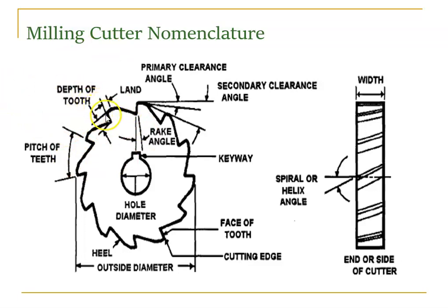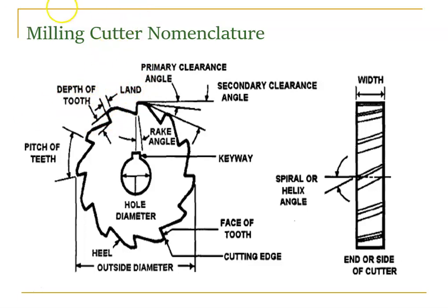Depth of tooth is a linear distance — the linear distance measured vertically on the tooth. The face of the tooth is the forward-facing surface of the tooth. The land is a narrow surface behind the cutting edge on each tooth. The land has a slope; it is not flat. This slope creates the primary clearance angle, which provides clearance so chips can be removed.